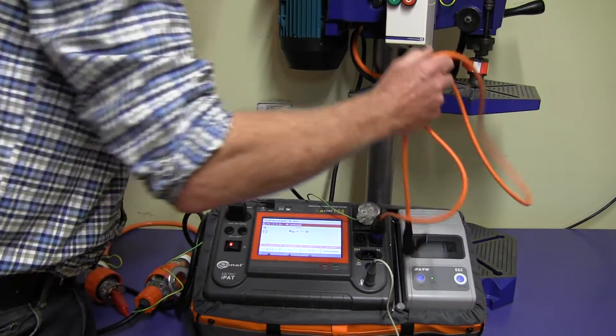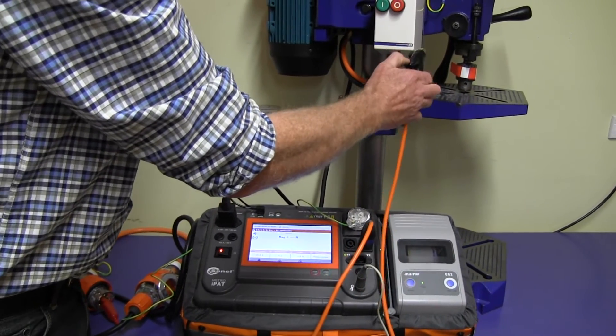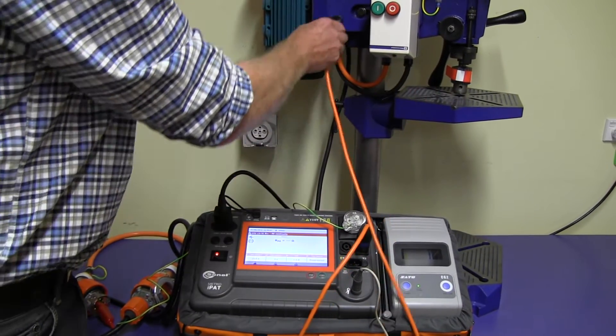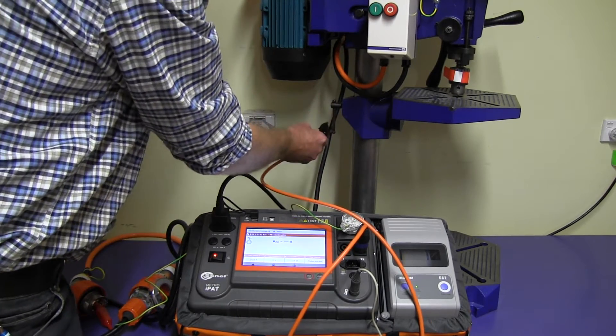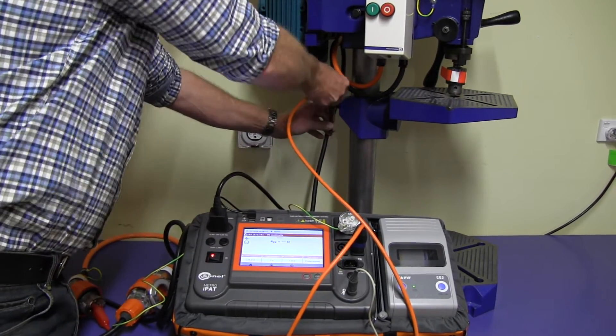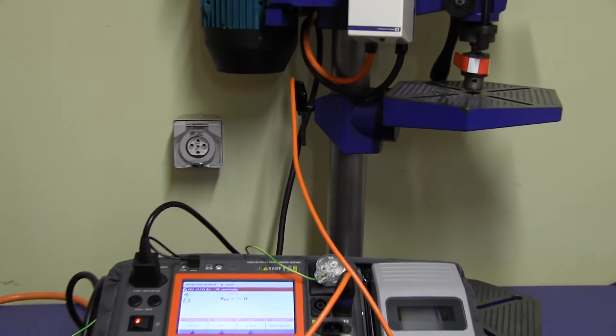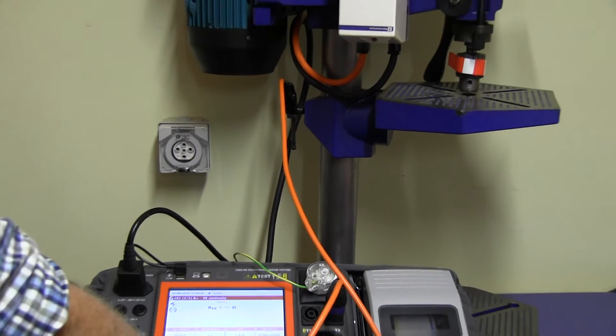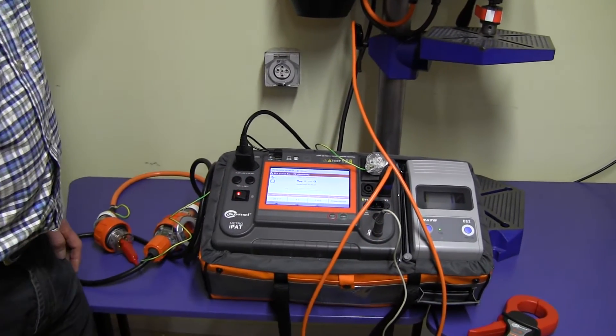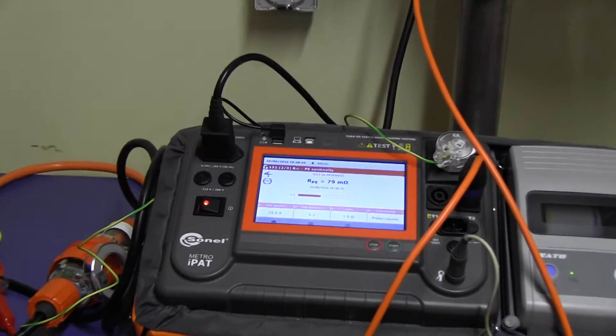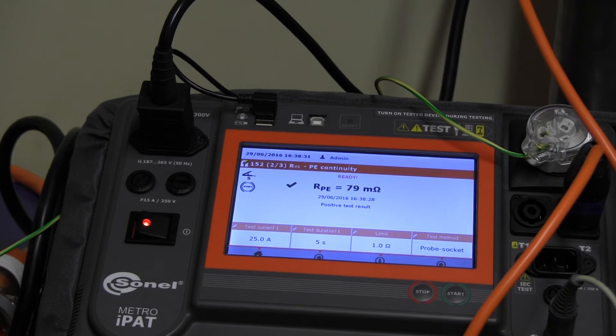The wander lead needs to go to a metal part of the three-phase appliance. We can clip it onto the drill press. Then we press start on the PAT tester. It's now measuring the earth resistance. It's coming back at 79 milliohms, which is really good.